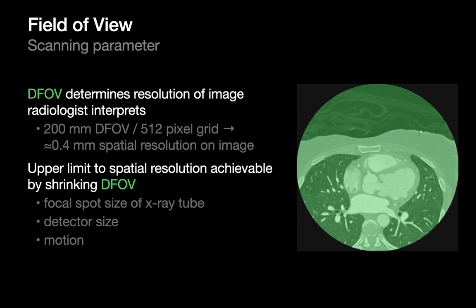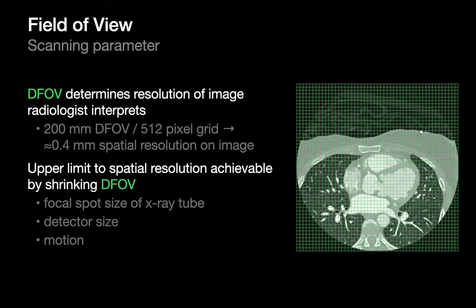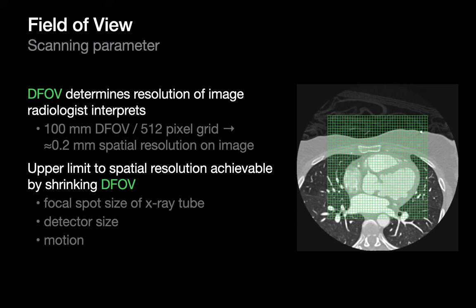You can do a rough calculation of DFOV's effect on spatial resolution. If our CT image is a 512×512 pixel grid and the DFOV is 200 mm, then 200 mm ÷ 512 pixels means every pixel represents 0.4 mm. If the DFOV is 100 mm, then 100 mm ÷ 512 pixels means every pixel represents 0.2 mm instead — twice the spatial resolution.